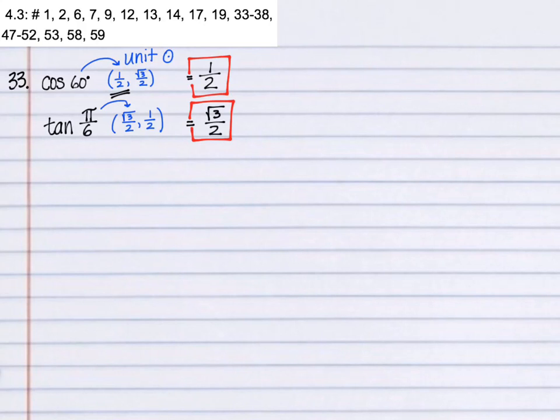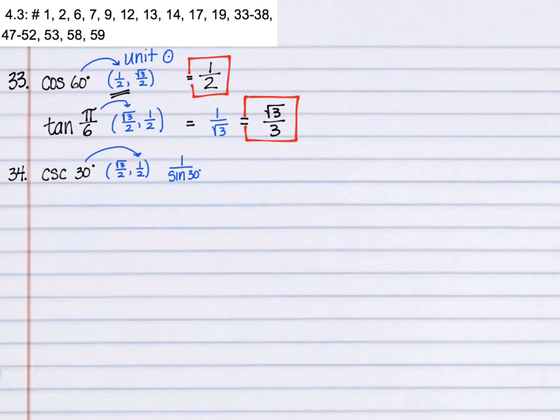Sorry about that. So tangent of pi over 6, those are the coordinates for pi over 6. And tangent happens to be y divided by x. And so you're going to end up with 1 over root 3, which we rationalize the denominator and we get root 3 over 3. Cosecant of 30, and remember that cosecant is 1 over sine, and the sine is 1 half. So 1 over 1 half, or the reciprocal of 1 half, is 2.